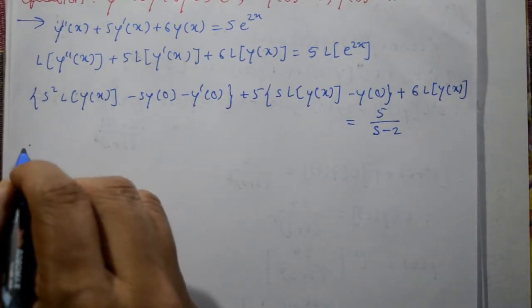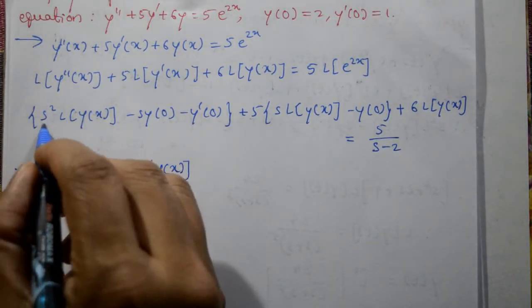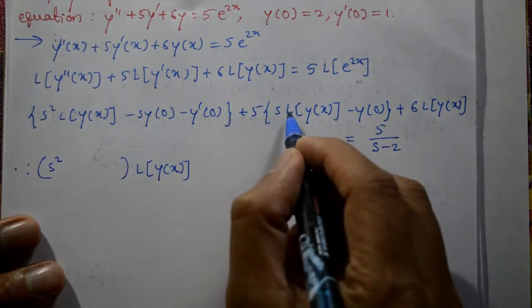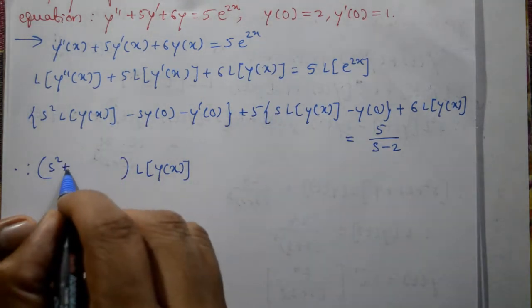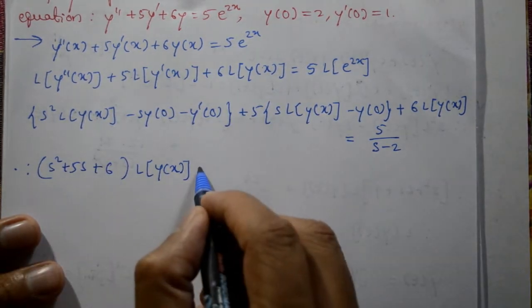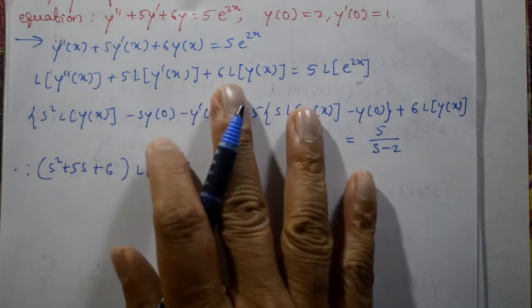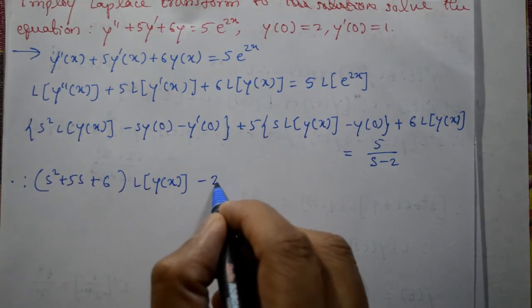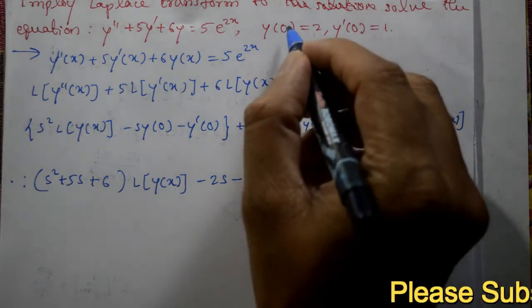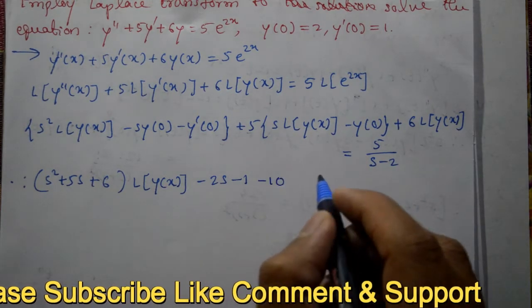Now what do we do? Taking coefficient of Laplace of y of x. Coefficient is s square plus 5s plus 6. The remaining terms: y of 0 is 2, so minus 2s. Y dash of 0 is 1, so minus 1. And y of 0 is 2, so 5 into 2, but minus sign, minus 10. This is equal to right hand side 5 by s minus 2.